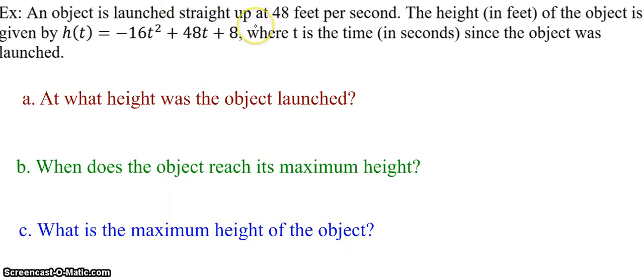So an object is launched straight up at 48 feet per second. The height in feet of the object is given by h(t) equals negative 16t squared plus 48t plus 8, where t is the time in seconds since the object was launched.